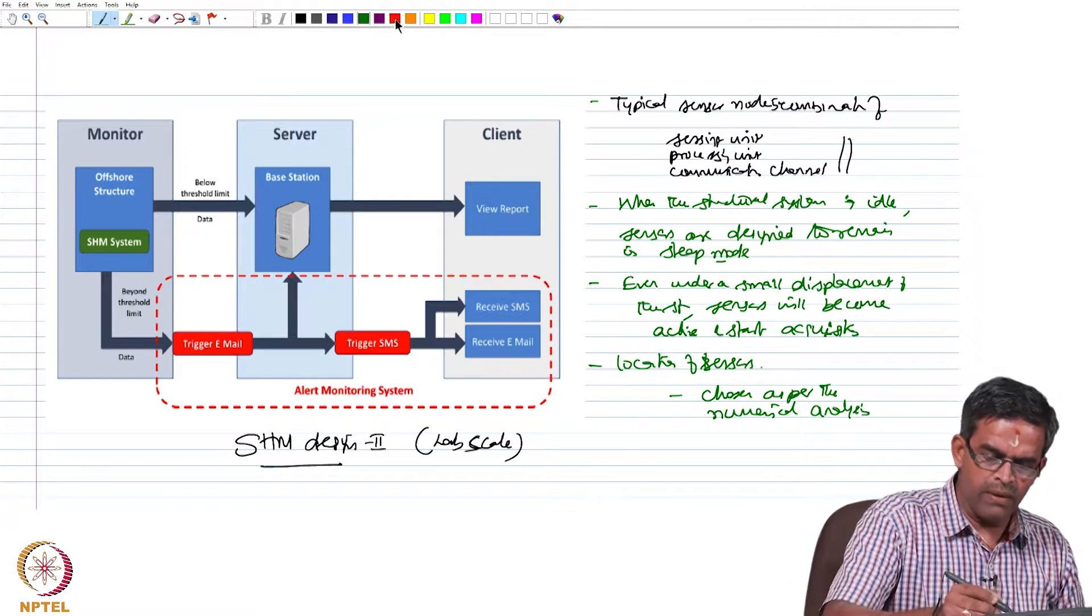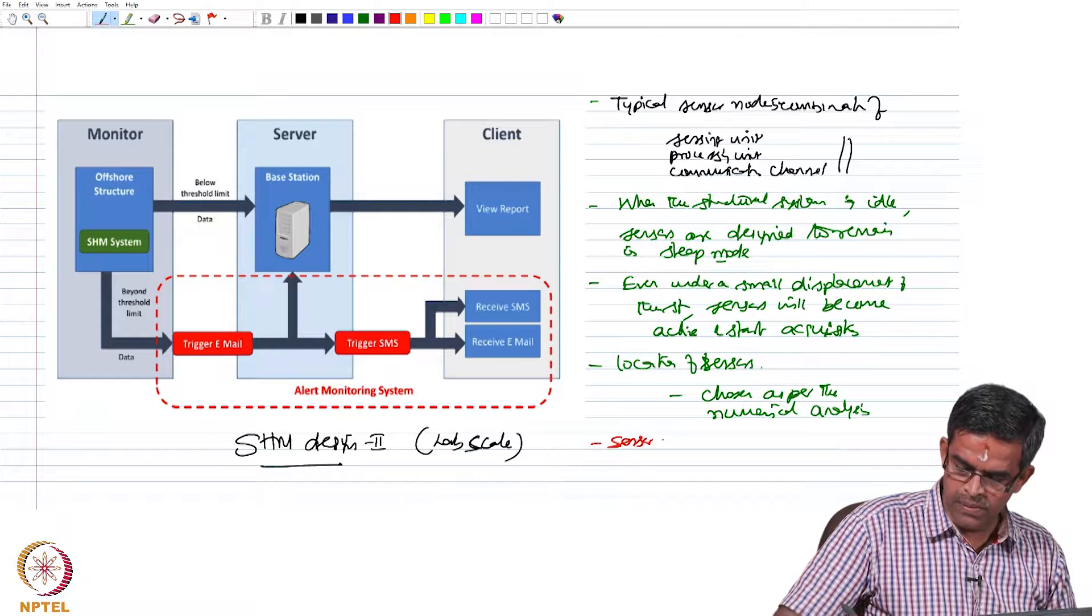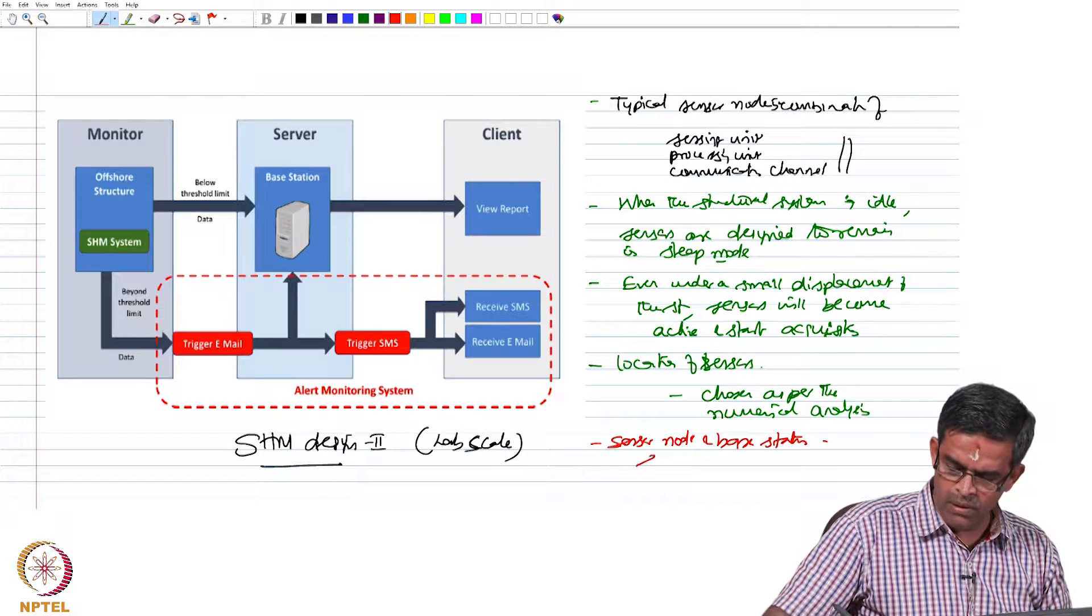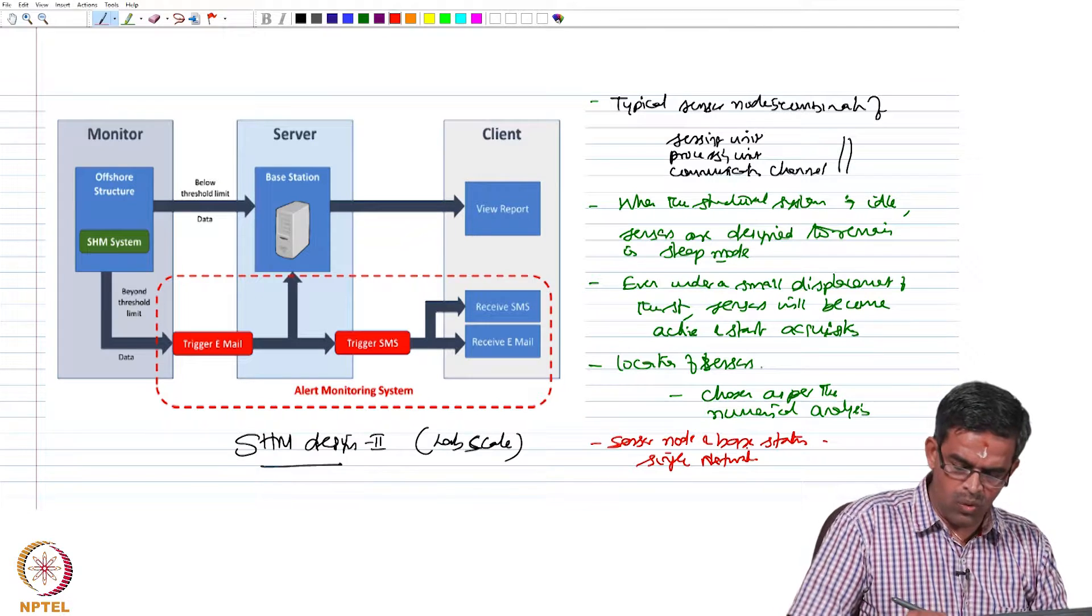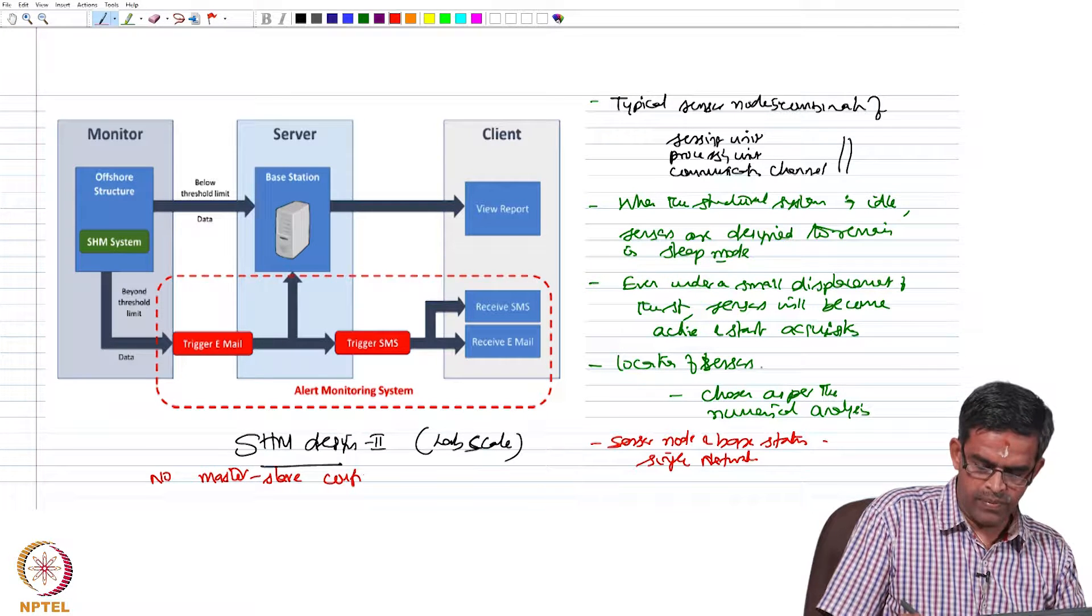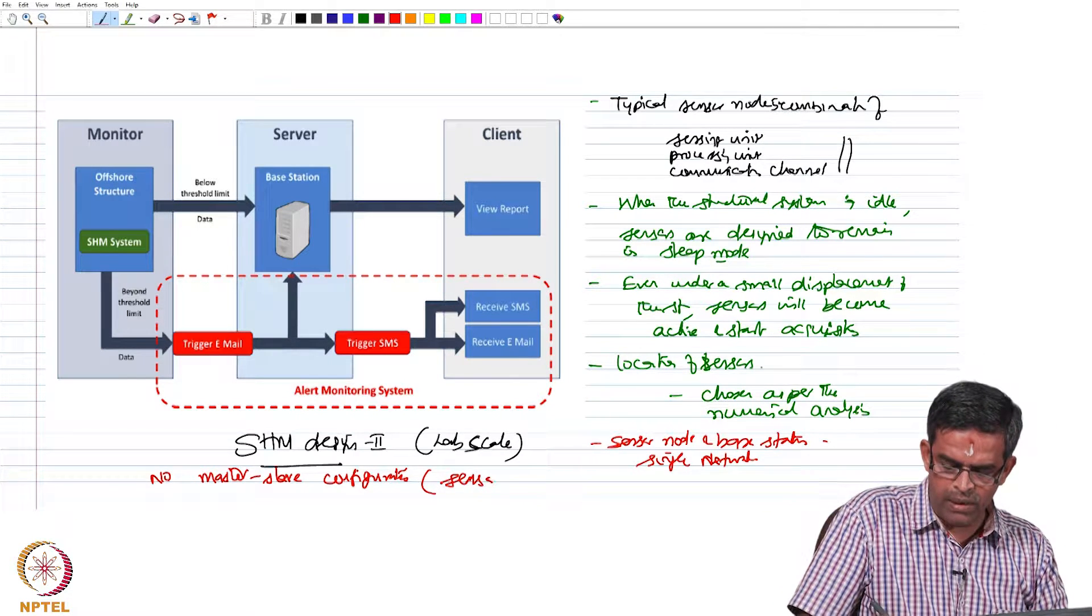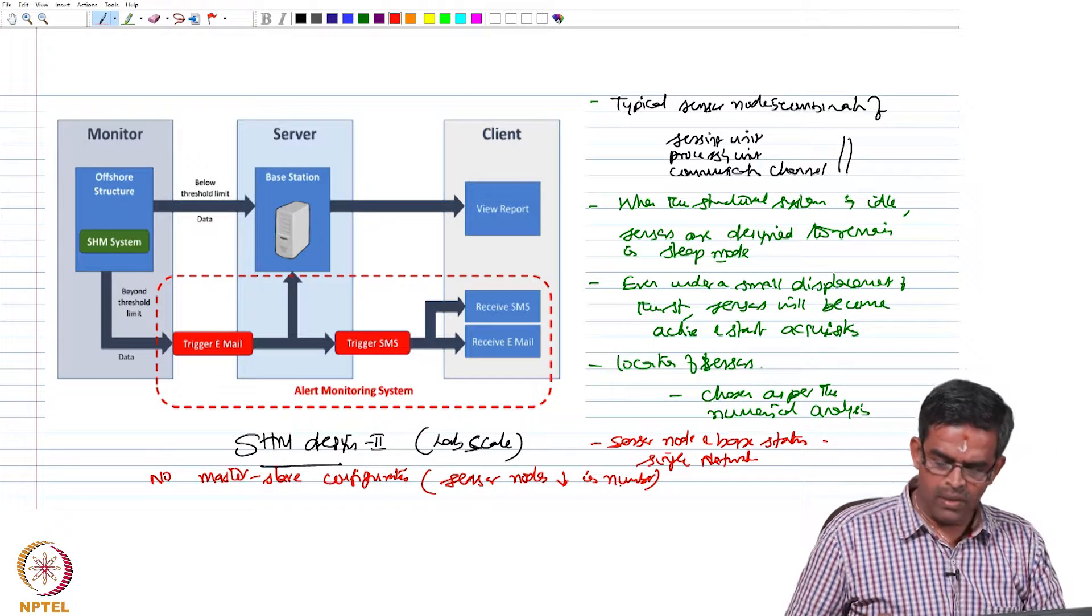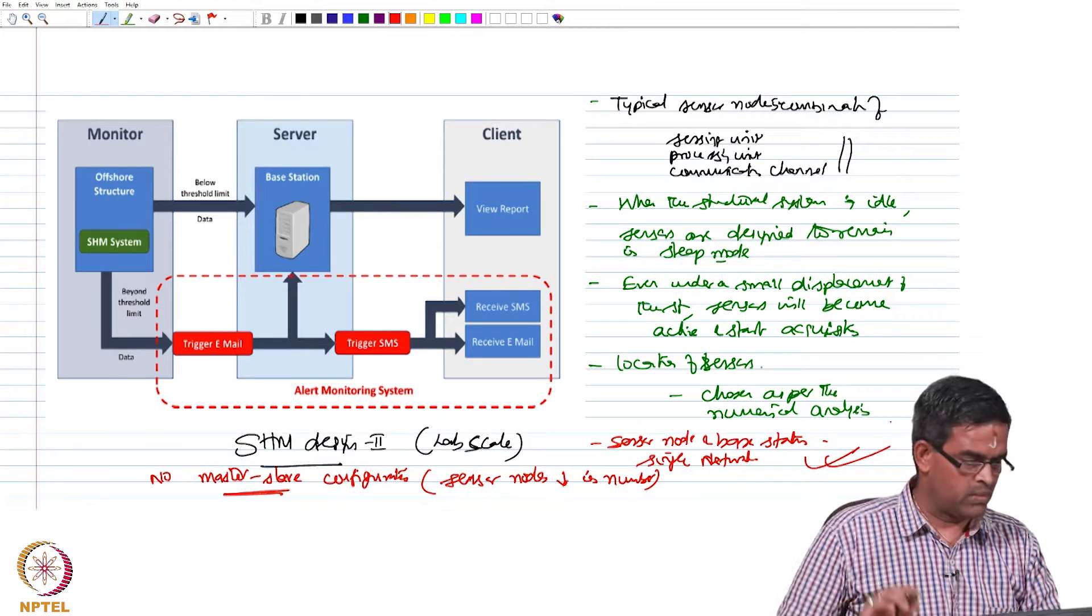In the present study, we have sensor nodes and base station connected to a single network. There is no master-slave configuration because in the lab scale the sensor nodes are very small in number. Therefore, there is no need to have an expandability of the master-slave configuration.